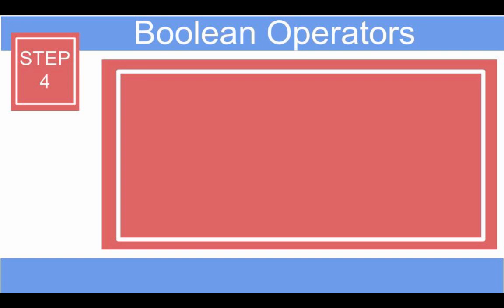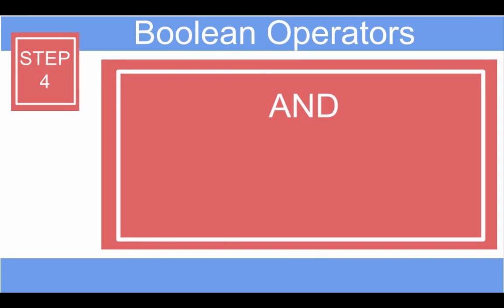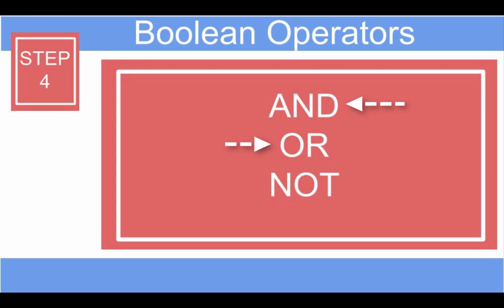Step 4. Construct your search using Boolean operators, often called connectors. They are simple words — AND, OR, NOT — that will help you to refine your search. We will concentrate on AND as well as OR.